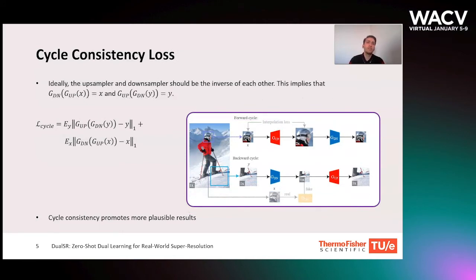We have two cycles in the Dual SR architecture. In the forward cycle, we first apply the upsampler to generate a 2x upsampled image, then the downsampler is applied and converts the result back to the original scale. Cycle consistency implies that the result should be the same as the original input. We have a similar loss function in the backward cycle. Our experiments show that both forward and backward cycle consistency losses play an essential role in training, and they promote the upsampler and downsampler to generate more plausible results.